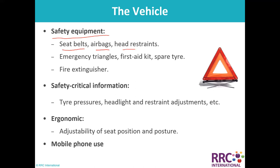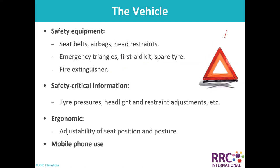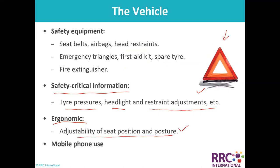Check safety equipment: seat belts, airbags, fire extinguisher, and warning triangle — these must be present in the vehicle at all times. Safety critical information should be known: tire pressure, headlight adjustment, and ergonomic restraint adjustment for seat position to avoid work-related upper limb disorders. Mobile phone use policy should be clearly explained — the driver must park before using a phone.